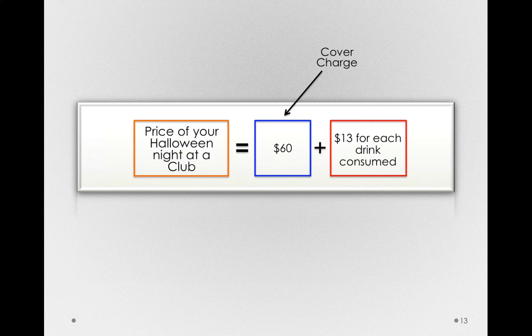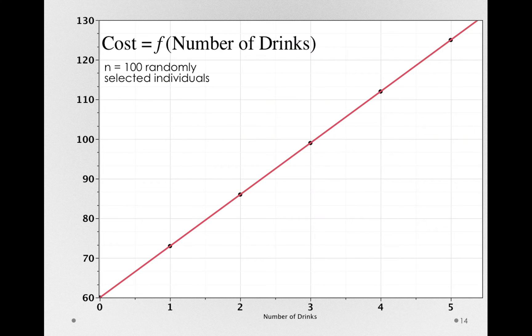So a fixed cost for each drink led to a situation where there was no error in the data. That is, individuals who drank the same number of drinks paid identical amounts at the club.